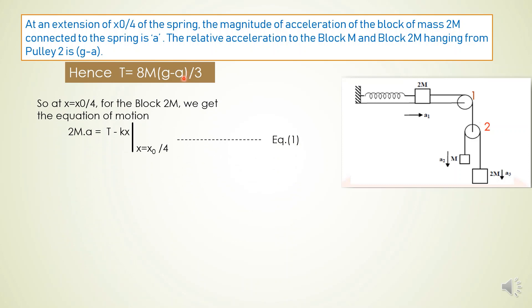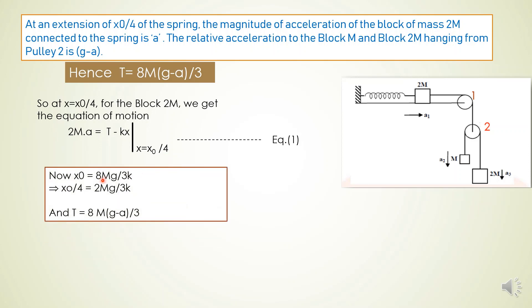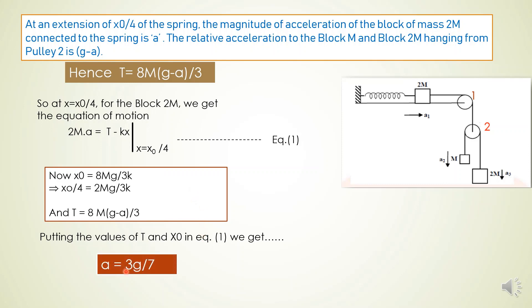At x equal to x0/4, the equation of motion for block 2m is: 2m times a equals T minus kx. Substituting the known values of x0 and T into this equation gives the value of the acceleration as 3g by 7. So option C, which states the acceleration is 3g by 10, is also incorrect.